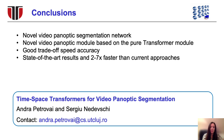In conclusion, we have presented a novel video panoptic segmentation network and a novel video module inspired by a pure transformer block. Experiments demonstrate that our network offers a good trade-off between speed and accuracy, achieving state-of-the-art results on the Cityscapes VPS dataset while being 2 to 7 times faster than current approaches. Thank you for your attention and feel free to reach out for any questions.